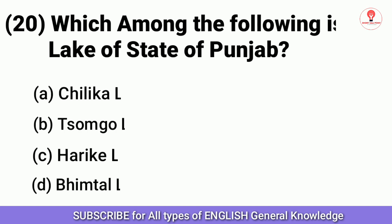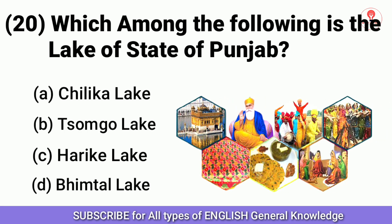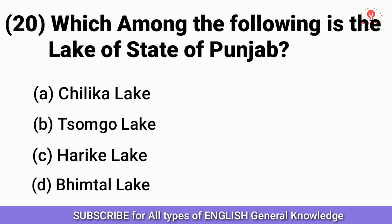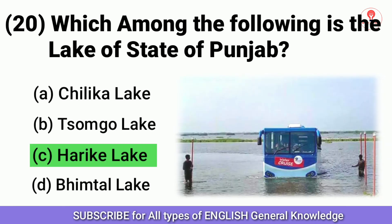Which among the following is the lake of the state of Punjab? Answer C: Harike Lake.